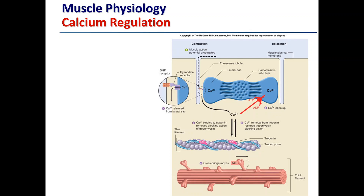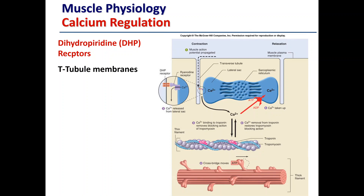So what happens when we receive an electrical stimulus? A muscle action potential is propagated along the muscle plasma membrane and penetrates down into the muscle via the transverse tubules. These transverse tubules are located in close proximity to the sarcoplasmic reticulum, represented here in blue — the mesh-like structure in close proximity to the filaments of the muscle.